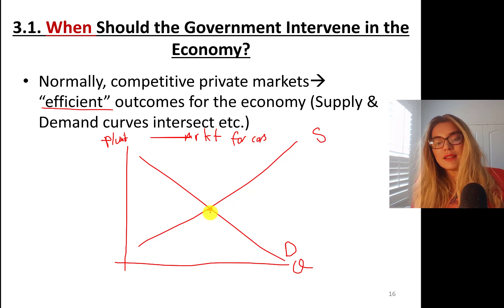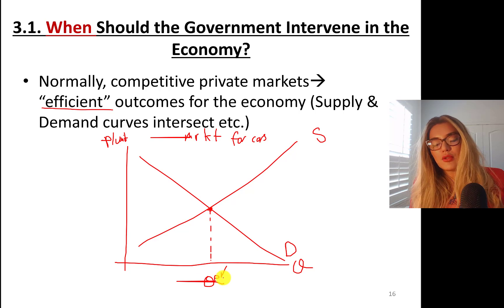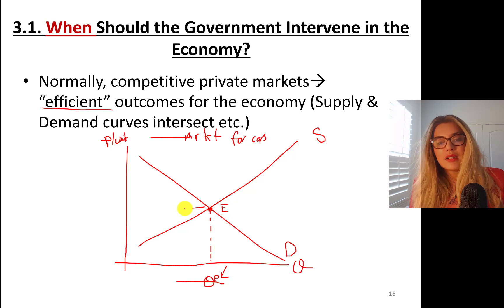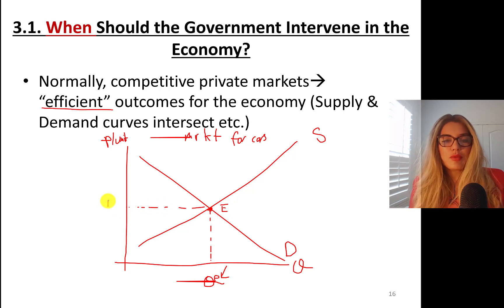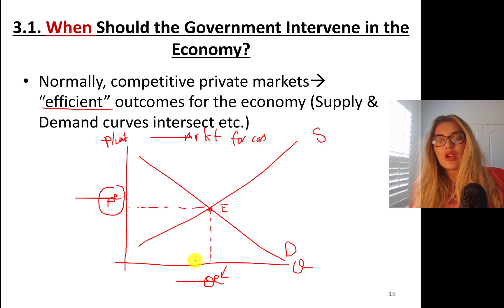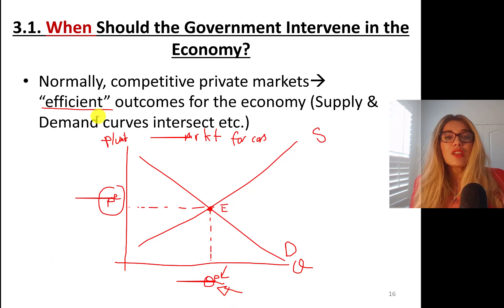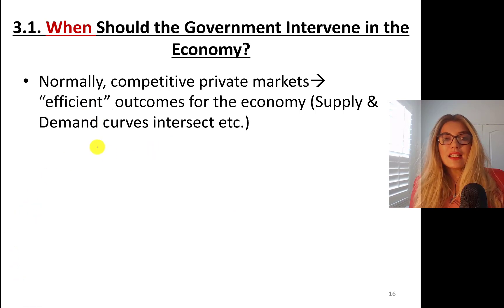Supply and demand curves intersect to yield the optimal level of output, which is the equilibrium quantity — E for equilibrium. Remember your principles classes: this is the price that clears the market. At this price level, quantity demanded is exactly equal to quantity supplied. The market clears and everybody's happy. So normally, competitive private markets yield economically efficient outcomes.